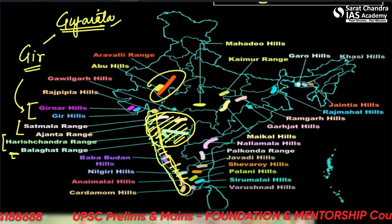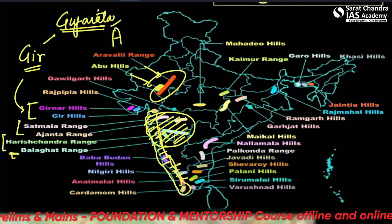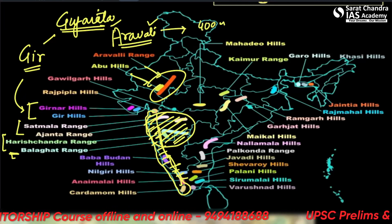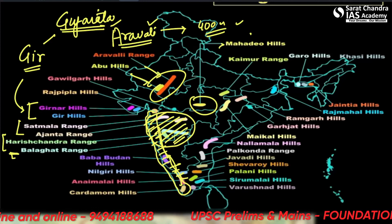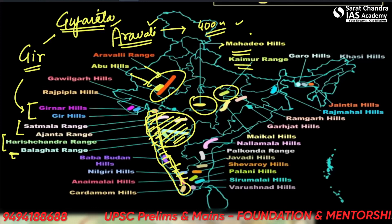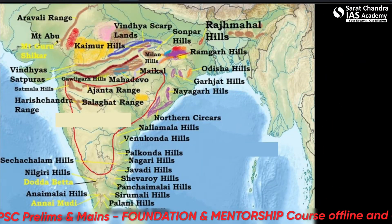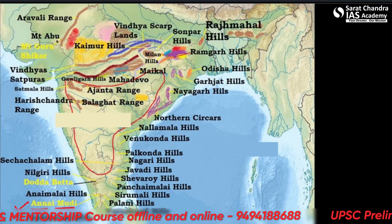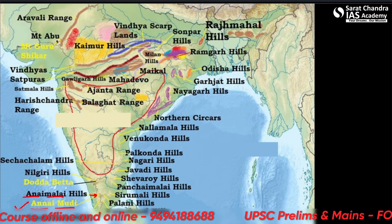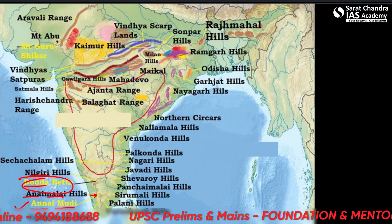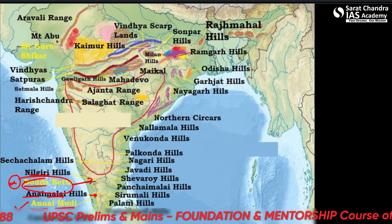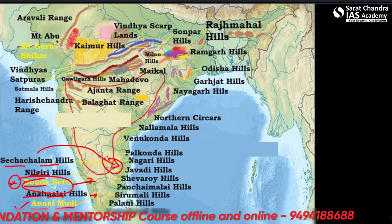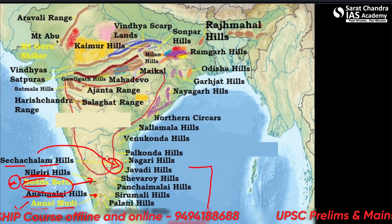Aravalli and Abu Hills are in Rajasthan, with a fairly low elevation — about 400 meters on average. Mahadev Hills and Kaimur Range are very important. Anaimudi is specifically highlighted as the topmost range in the Western Ghats. Nilgiri Hills include Doddabetta, the highest peak of Tamil Nadu. Seshachalam Hills, mentioned in the UPSC statement, are in Andhra Pradesh. The Jawadi, Shaivaroy, Panchamalai, Sirumalai, Palani, and Varushanadu Hills are all in Tamil Nadu.